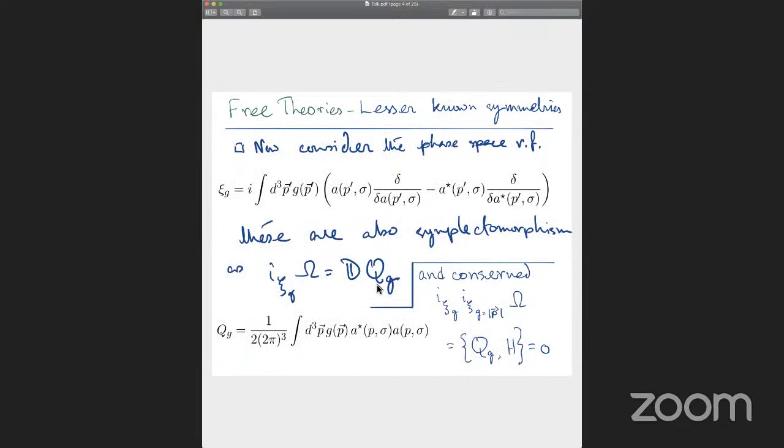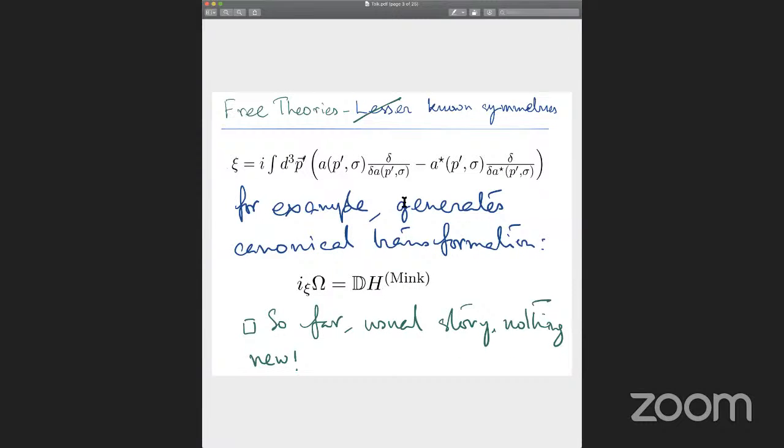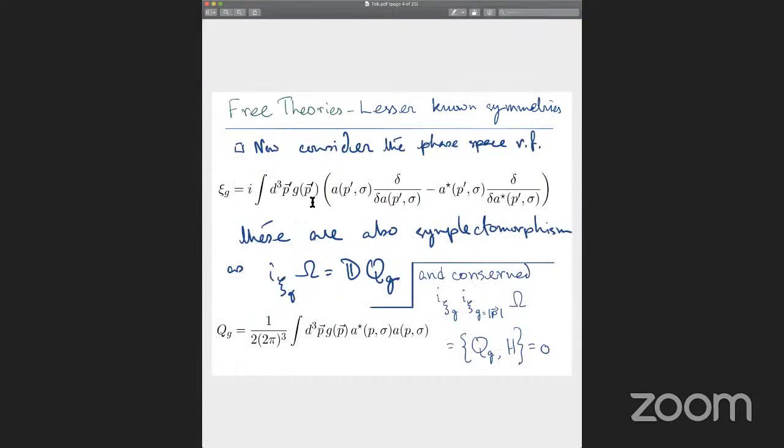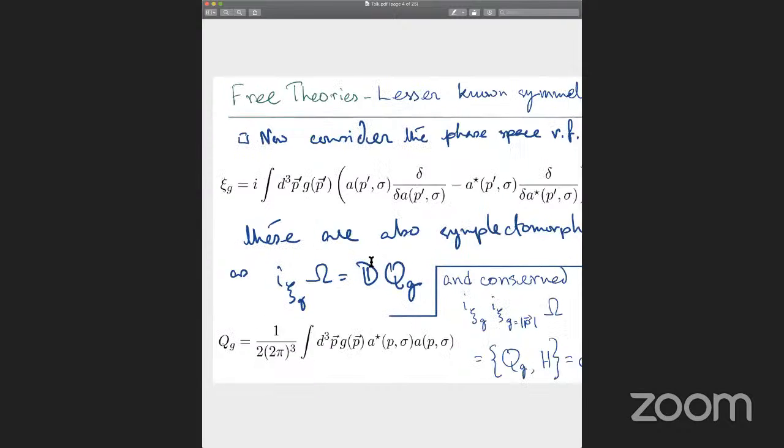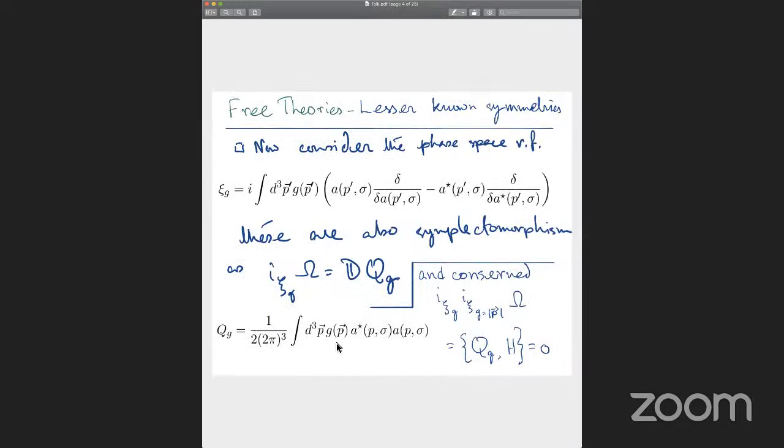This is the same thing, but in different notation, where Xi is a generator of Hamiltonian transformation on the phase space. And consequently, in free field theories, they give conserved quantities as well. Now there are lesser known, these are known of course, that's why free field theories are integrable, but not much interesting from various points of view.